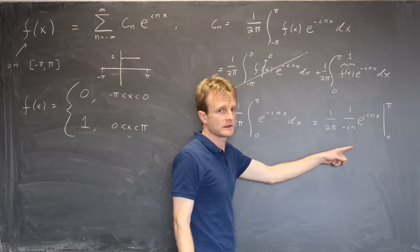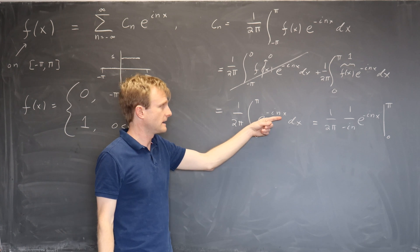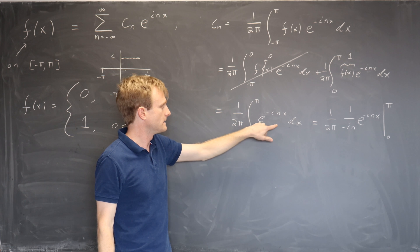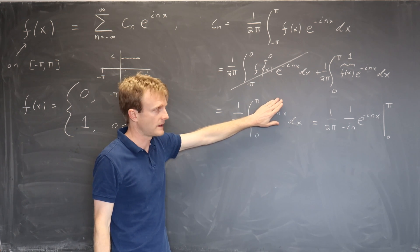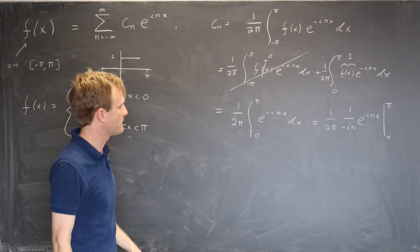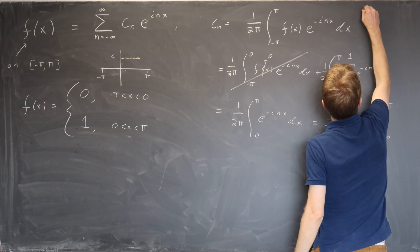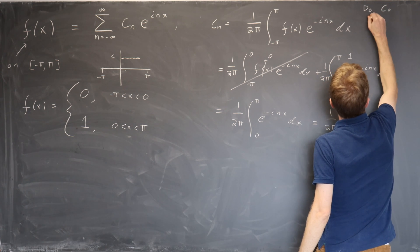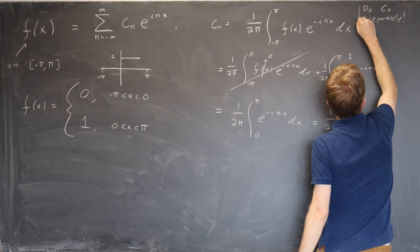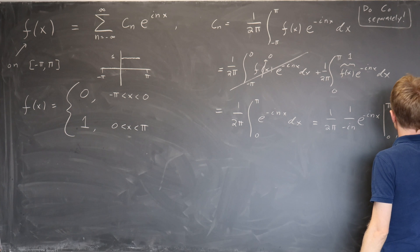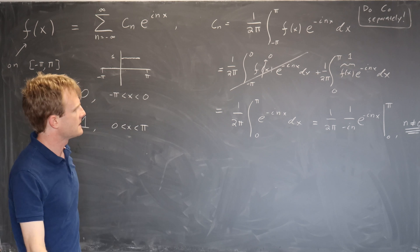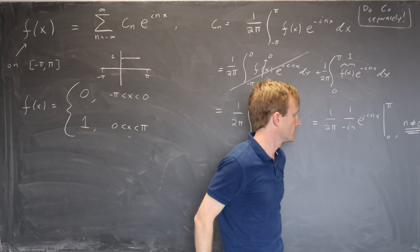This doesn't make sense if n equals 0, and that's telling you that the anti-derivative wasn't correct. Because if n equals 0, then this is just 1, and the anti-derivative is just x. It's not this thing. So be careful. The c_0 term often requires special treatment. So usually you do c_0 separately. So this expression that we're working on now is for n not equal to 0. We'll come back to c_0 at the end, but that's pitfall number one.